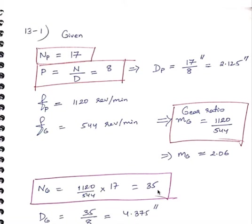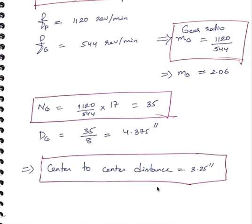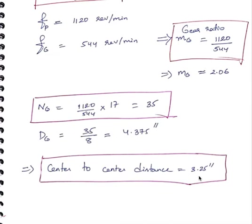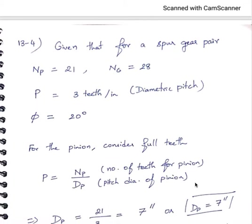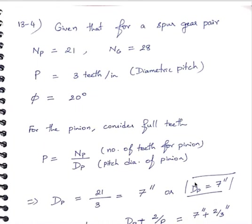The number of teeth for the gear equals the gear ratio multiplied by the number of teeth for the pinion, which turns out to be 35. The pitch circle diameter for the gear is the number of teeth divided by the diametric pitch, equal to 4.375 inches. Note that the module, diametric pitch, and pressure angle must be identical across the two mating gears. The center-to-center distance is the sum of both pitch circle diameters divided by two, coming out to 3.25 inches.